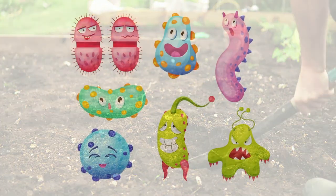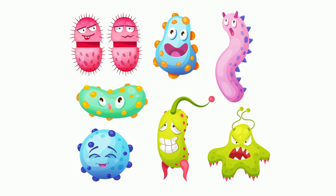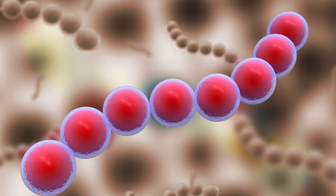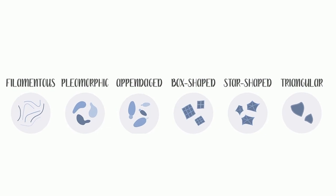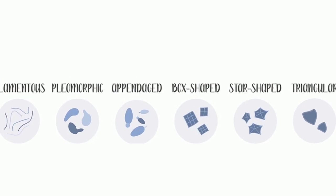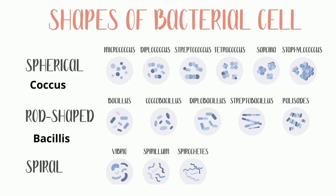However, not all bacteria look the same. Some are round, some are rod shaped, and some have very unusual shapes. In general, bacteria can be classified according to three basic shapes: round or spherical, rod-like, and spiral or twisted.